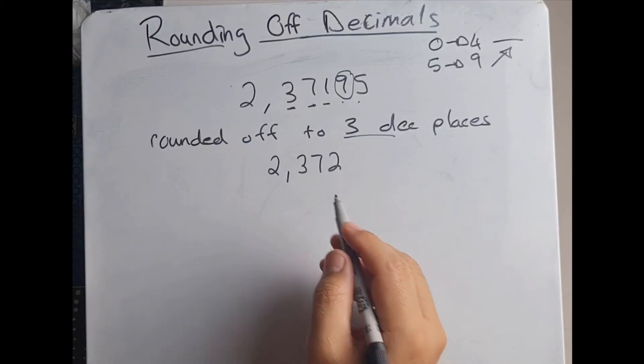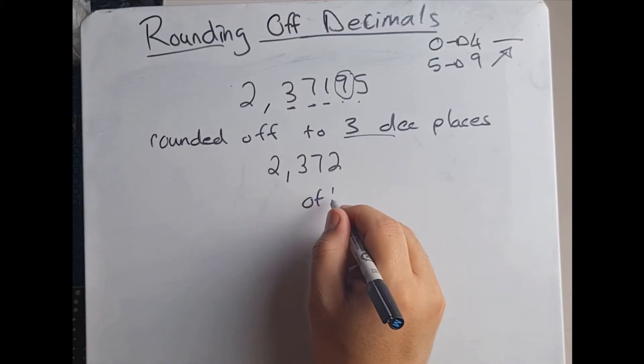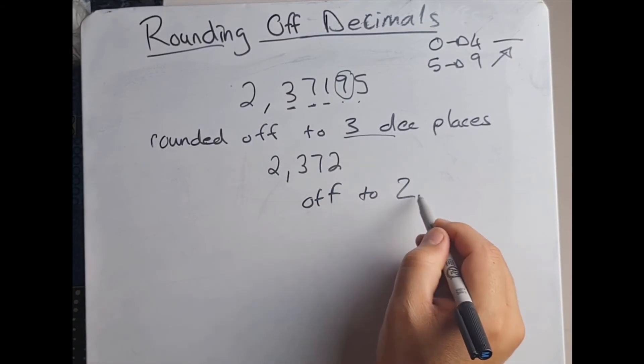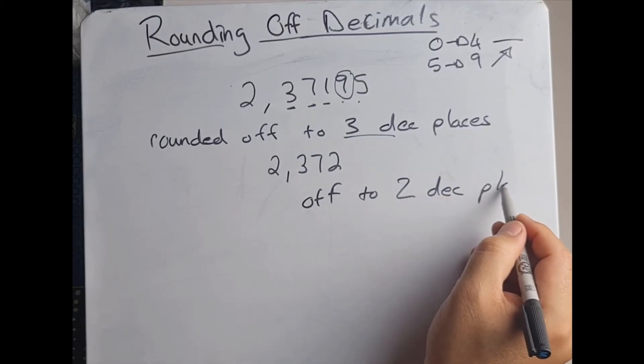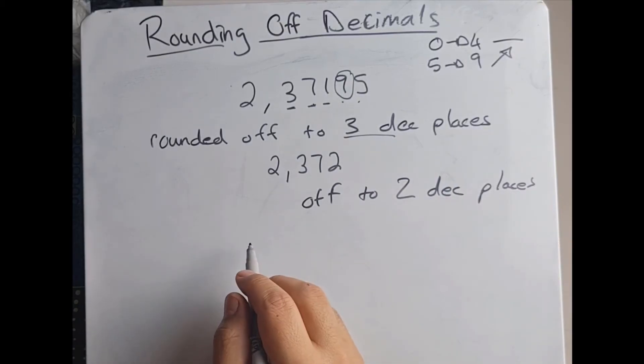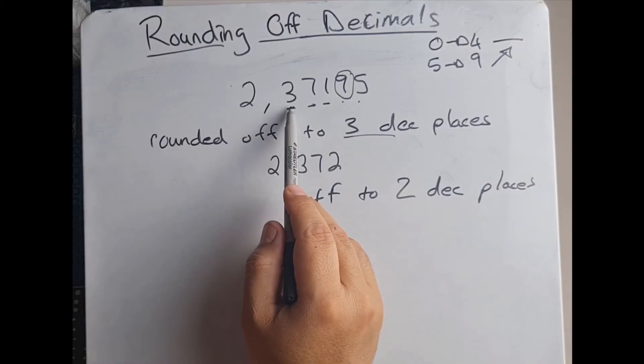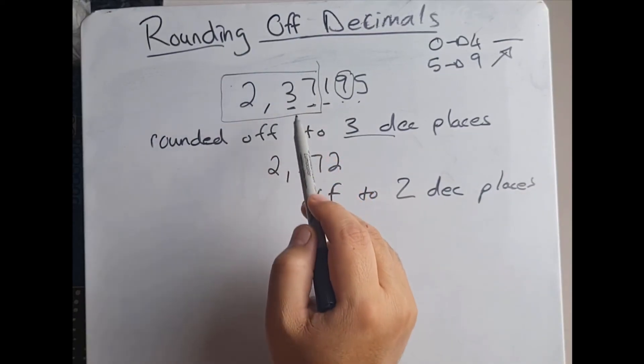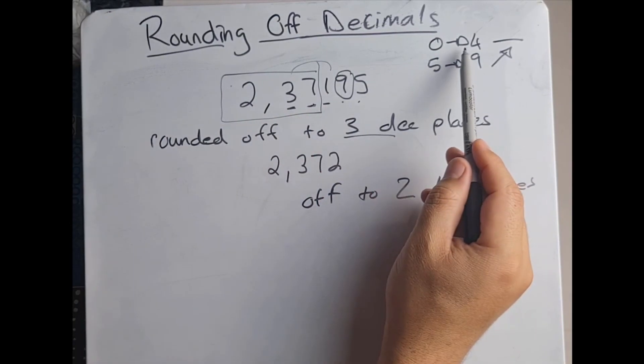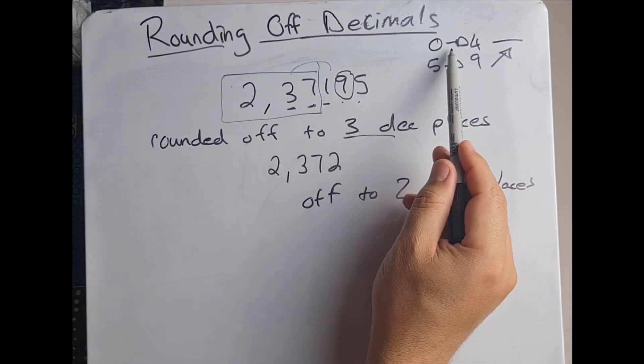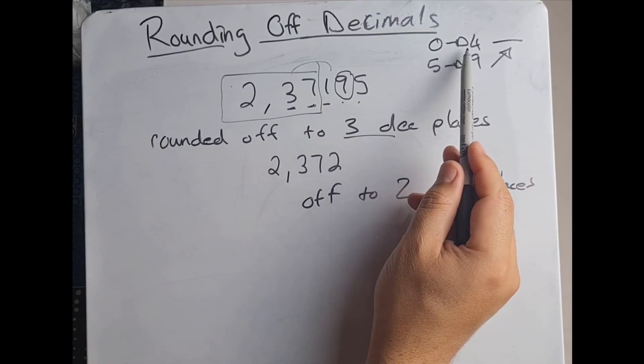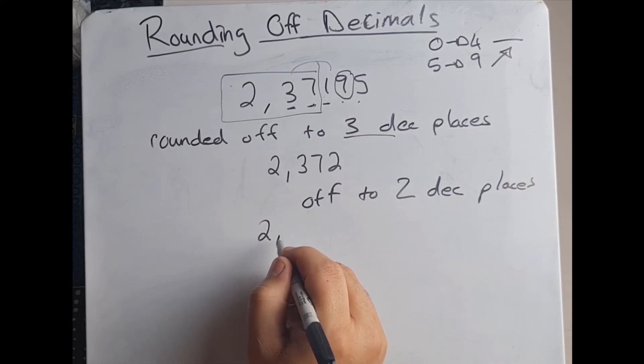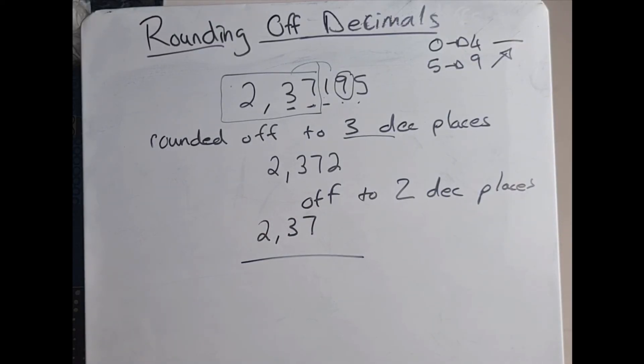Let's look at another one. What if I take that same number and I want it rounded off to two decimal places? I go back to my number 2.37, so they only want it up until there. I look to my neighbor, what do we see there? The first rule applies, it's between 0 and 4, which means it stays the same. Which means my answer will be 2.37. And again that's the rule we apply when it comes to rounding off with decimals.